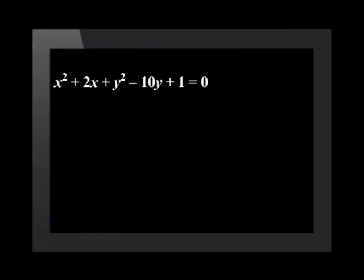Now let's apply this to our problem: x squared plus 2x plus y squared minus 10y plus 1 equals 0. First, move the constant over the equal sign and group all the terms with x's and y's together. This gives us x squared plus 2x plus y squared minus 10y equals negative 1.